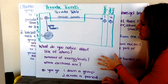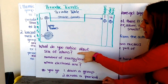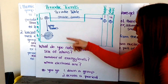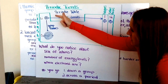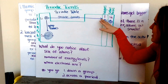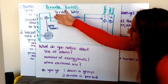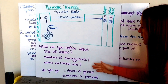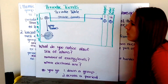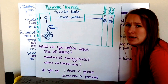Before we start into the trends, you want to take a look at: what do you notice about the overall size of the atoms as you go down a group and across a period? What about the number of energy levels — I'm adding as I go down my group, and they stay the same as I go across my period. And what about the electrons — where are they and how many do they have? These three questions will help you identify and understand the four different trends. We'll go over the first three in this video, and ionic radius will be in the next video.